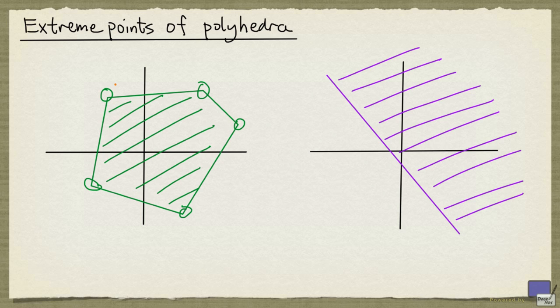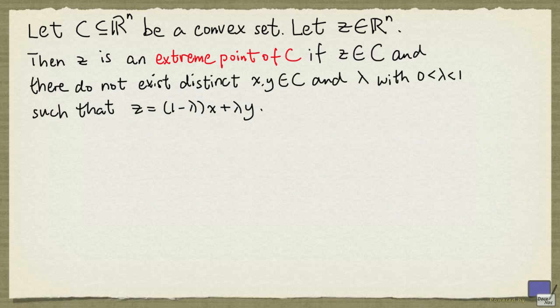But in the meantime, we need a characterization that characterizes these corners. And the definition is as follows. So we're going to define the notion of an extreme point of a convex set. Note that the set does not have to be a polyhedron. Let C be a convex set in R^n.